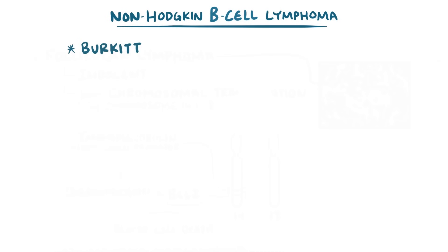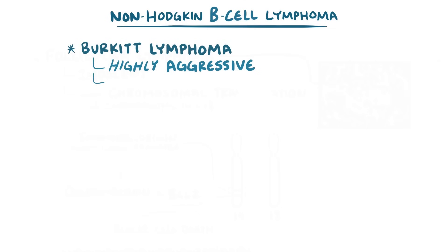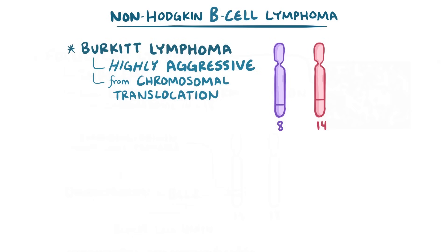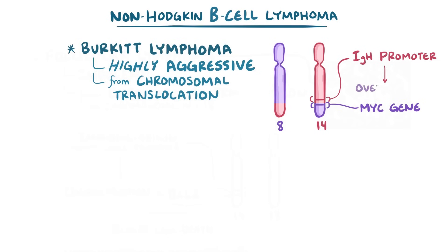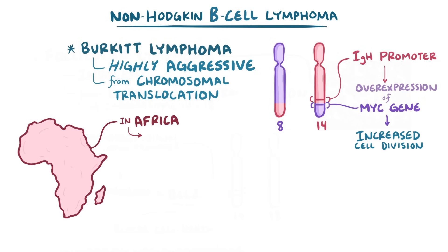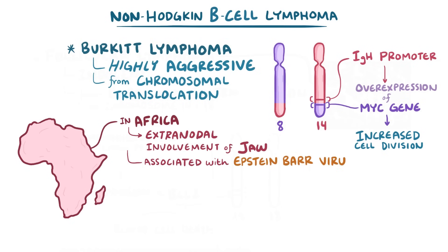A third type is Burkitt lymphoma, a highly aggressive lymphoma. It can also result from a chromosomal translocation where the MYC gene is translocated from chromosome 8, ending up adjacent to the IgH promoter on chromosome 14, upregulating its expression. The MYC gene stimulates cell growth and metabolism, resulting in increased cell division. In individuals in Africa, Burkitt lymphoma classically causes extranodal involvement of the jaw and is often associated with Epstein-Barr virus infection.